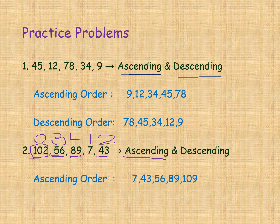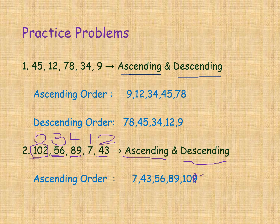The ascending order is: 7, 43, 56, 89, and 102. Here there is a small mistake — I correct the 9 and write 2. Sorry. So the ascending order is 7, 43, 56, 89, 102.